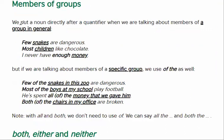Members of groups. We put a noun directly after a quantifier when talking about members of a group in general: 'Few snakes are dangerous.' 'Most children like chocolate.' 'I never have enough money.' Here, snakes, children, and money are members of a group in general. But if you're talking about members of a specific group, we use 'of the' as well: 'Few of the snakes in this zoo are dangerous' — specifically the ones in this zoo. 'Most of the boys at my school play football.' 'He spent all of the money that we gave him.'